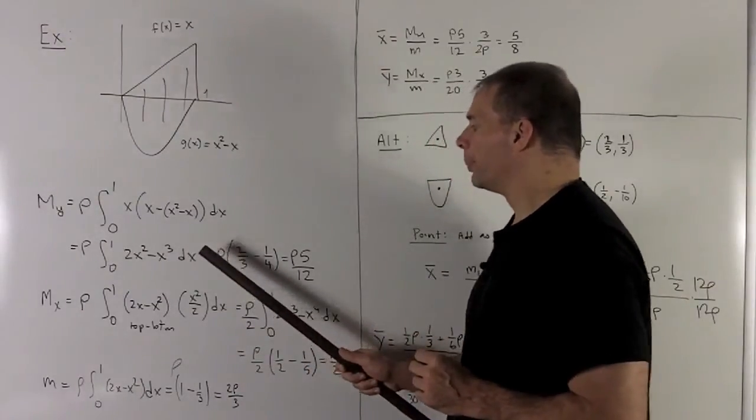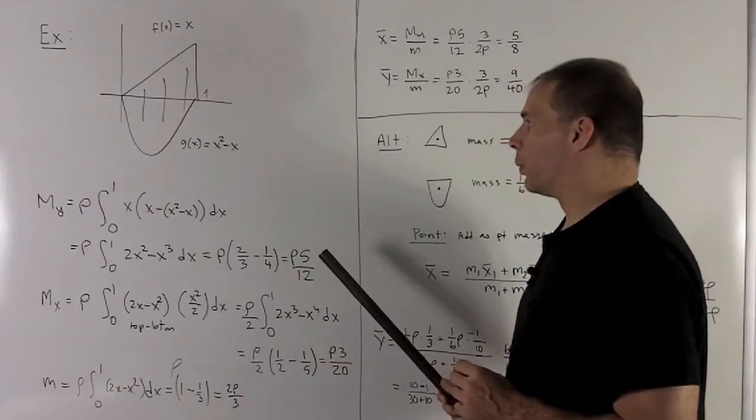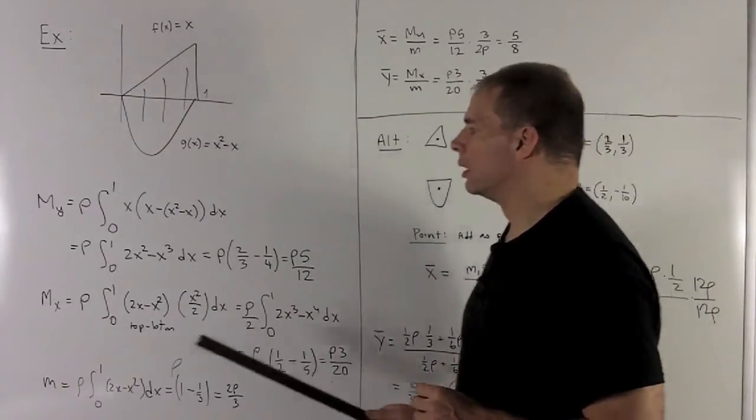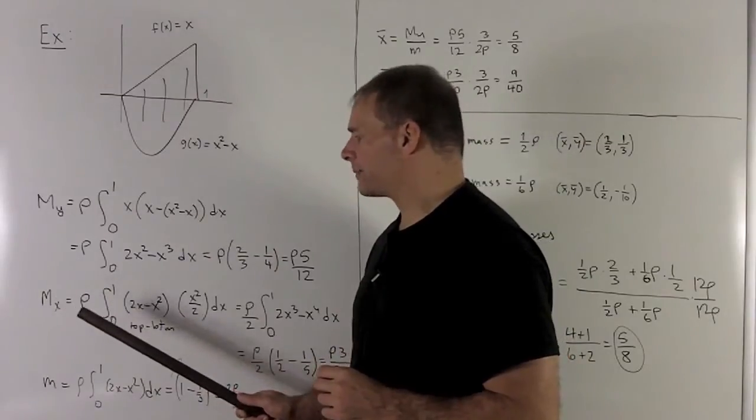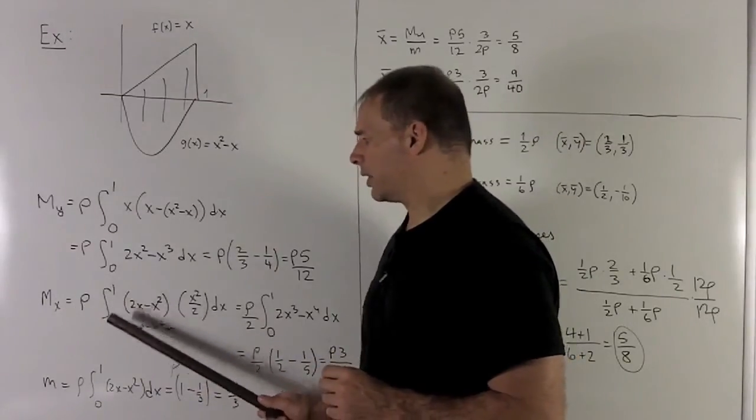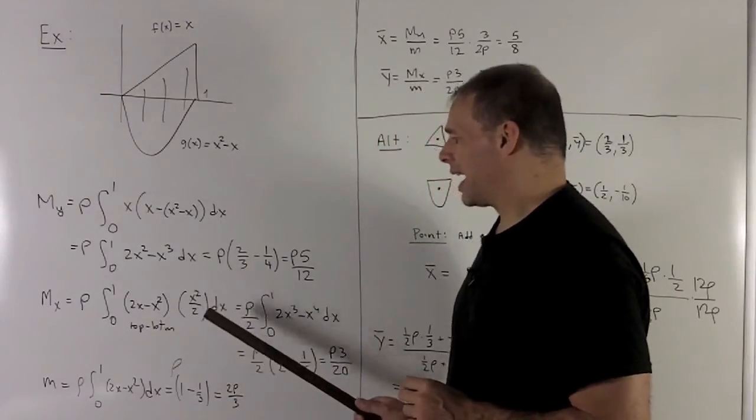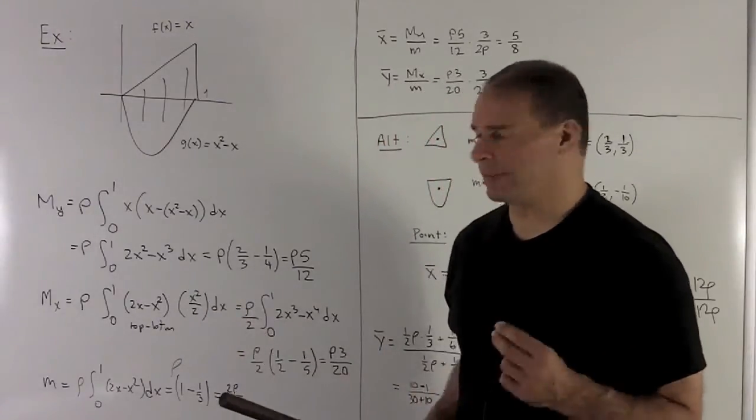We follow our nose through, and then we see that the moment about the y-axis is rho, 5 twelfths. The moment about the x-axis, it's going to be rho, definite integral from 0 to 1, our region, top minus bottom times top plus bottom divided by 2.